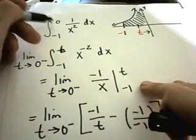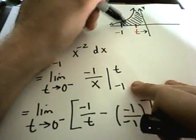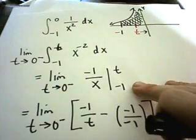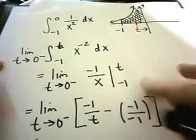In this case we're doing from negative one to zero, and it turns out somehow this area just to the left of the y-axis is just a bit too big.